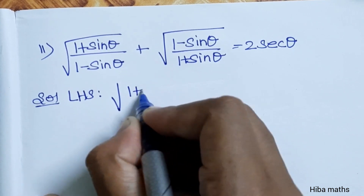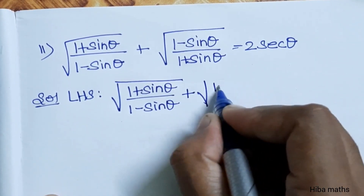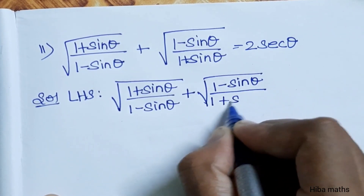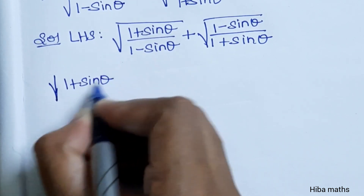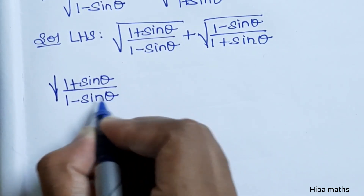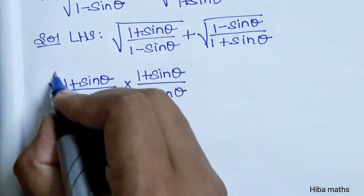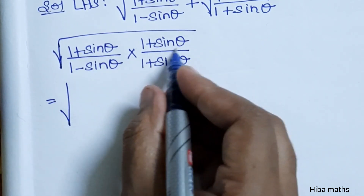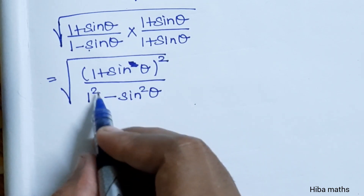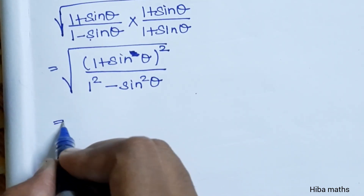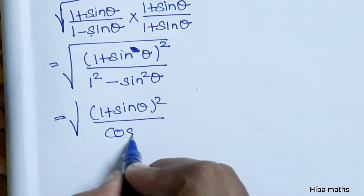The LHS is the square root of (1 plus sin theta) divided by (1 minus sin theta) plus square root of (1 minus sin theta) divided by (1 plus sin theta). For the first term, we multiply numerator and denominator by (1 plus sin theta) as the conjugate, giving (1 plus sin theta) whole square divided by (a plus b)(a minus b), which is a squared minus b squared, resulting in 1 minus sin squared theta, which is cos squared theta.